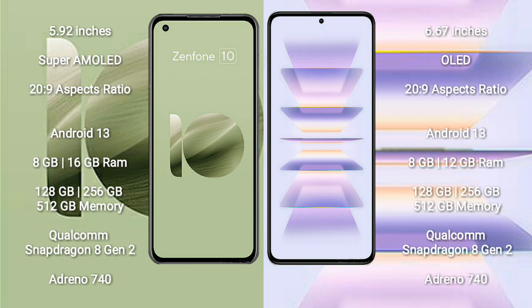Asus Zenfone 10 is powered by a Qualcomm Snapdragon 8 Gen 2 processor with an Adreno 740 GPU. Redmi K60 Pro comes with 8GB, 12GB, or 16GB RAM and 128GB, 256GB, or 512GB internal storage.